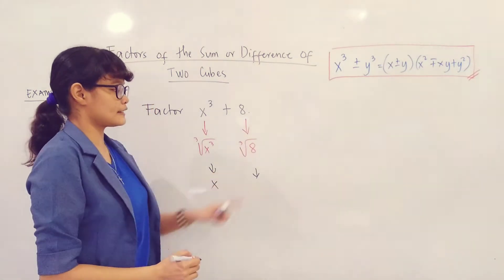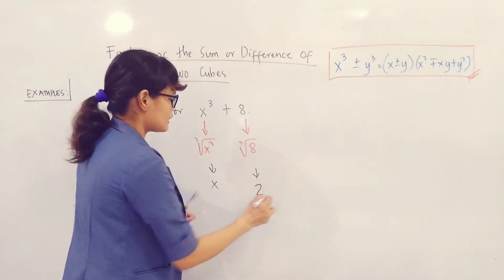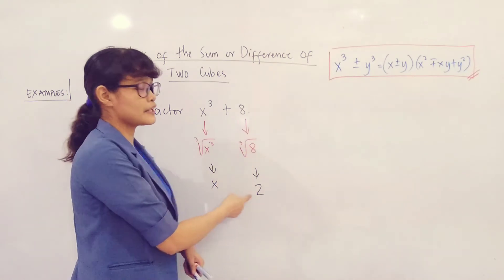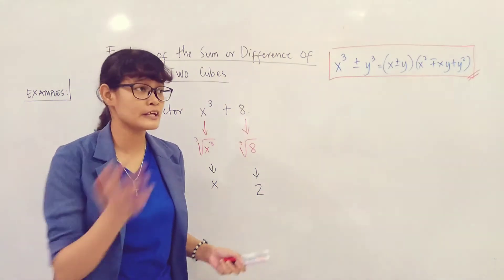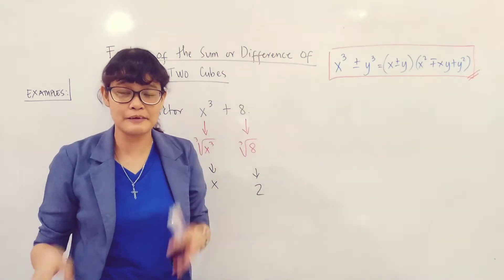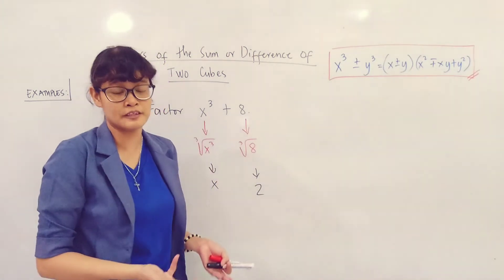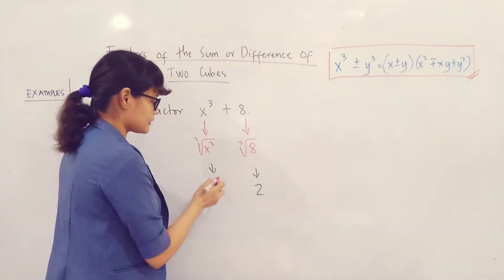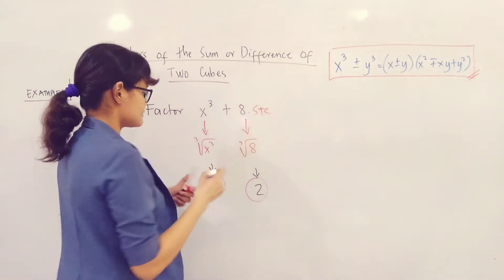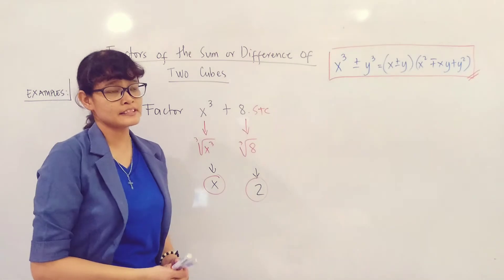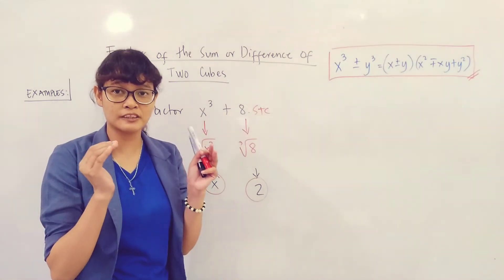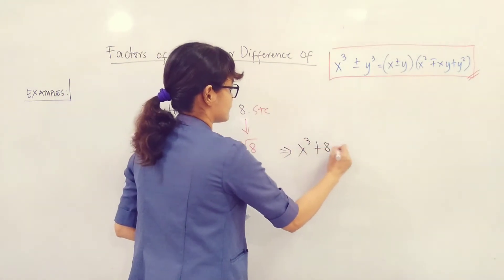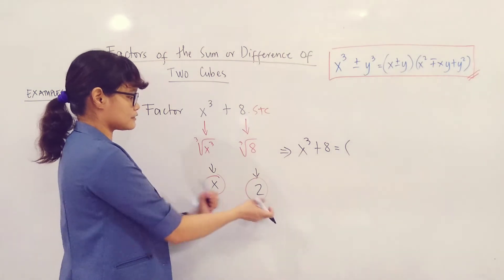The first step is to get the cube roots of each term in the given binomial. The cube root of x cubed: divide the exponent by 3, so 3 ÷ 3 = 1, giving us x. The cube root of positive 8 is 2. Note that the sign of the cube root matches the sign of the given number. So our cube roots are x and 2.